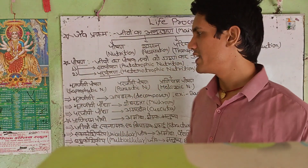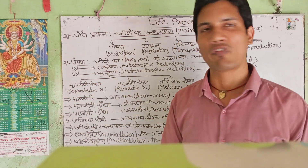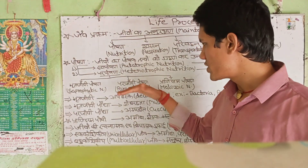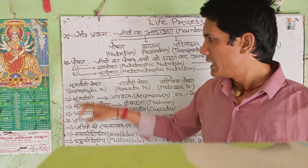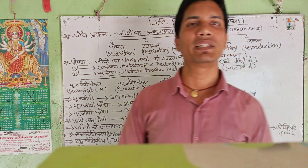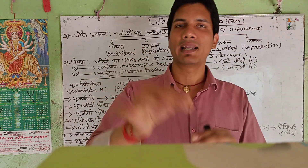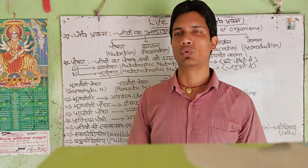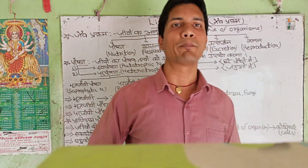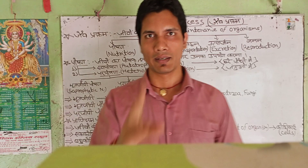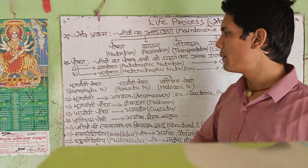If we say it in English, the three types of nutrition are: Saprophytic nutrition, Parasitic nutrition, and Holozoic nutrition. These represent different modes by which organisms obtain their food and energy.